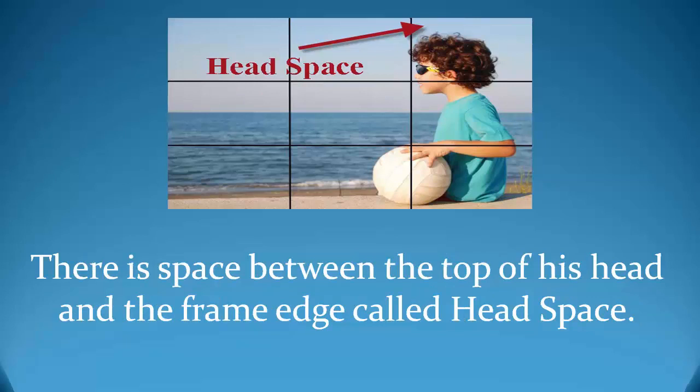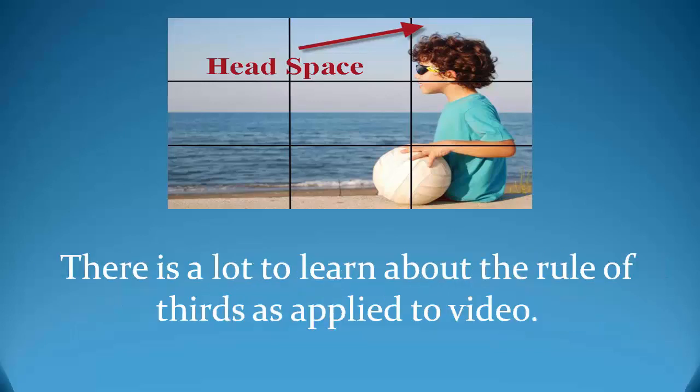If the boy was over to the left of the frame looking in the same direction, the audience would get a squashed sensation and feel uncomfortable. The space between the top of the frame and the top of his head is called head space. Too much and he would look too small; too little and he would look sort of chopped off, which would again make the audience uncomfortable. Don't get the idea that you are going to be able to exactly apply all of this every time you shoot — the best way to approach it is to keep all of these tips in mind and try as best you can to use them.